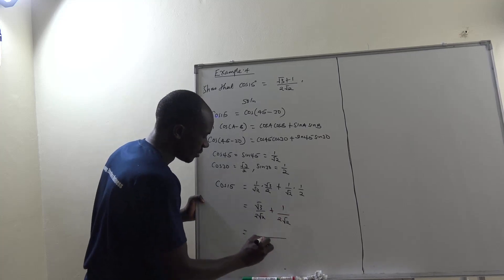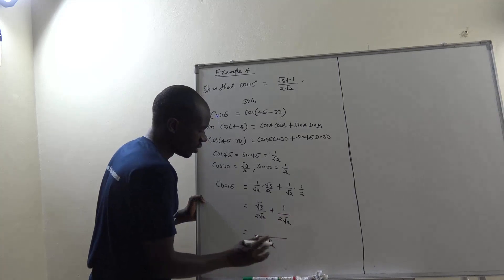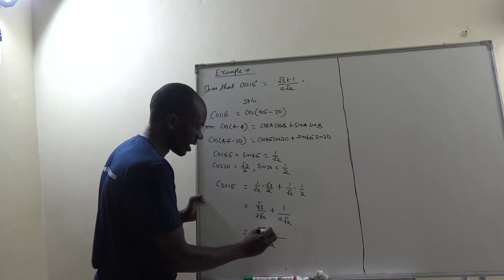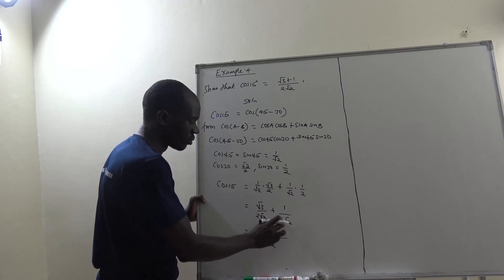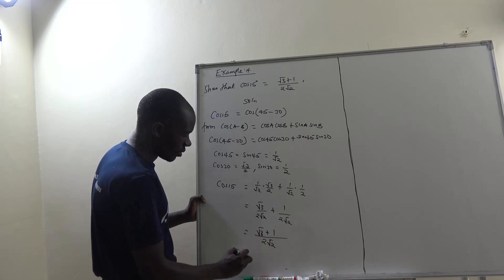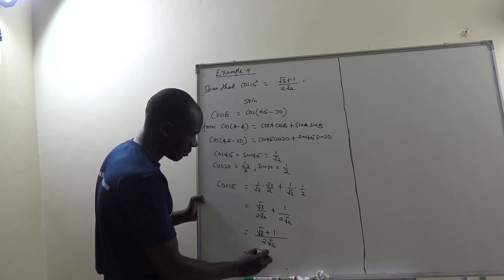What is the LCM? The LCM is 2 root 2. 2 root 2 divided by 2 root 2 is 1. 1 times root 3, we are getting root 3, plus 2 root 2 divided by 2 root 2, 1. So which becomes root 3 plus 1 over 2 root 2.